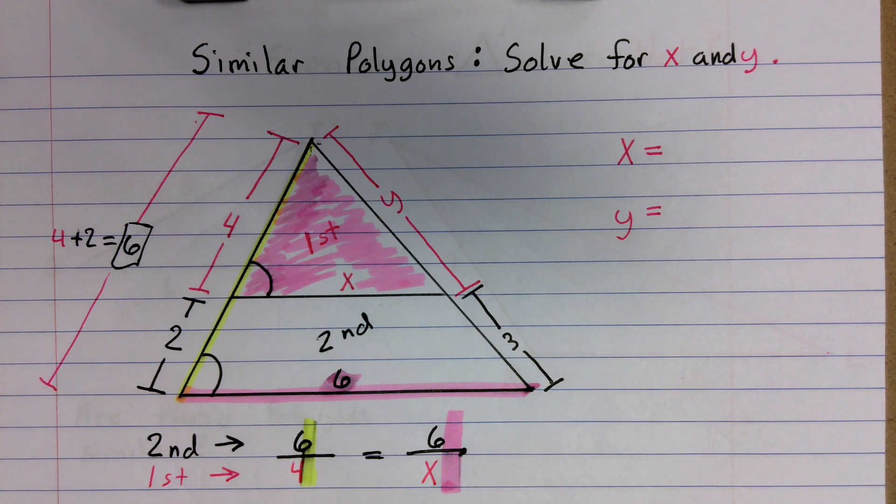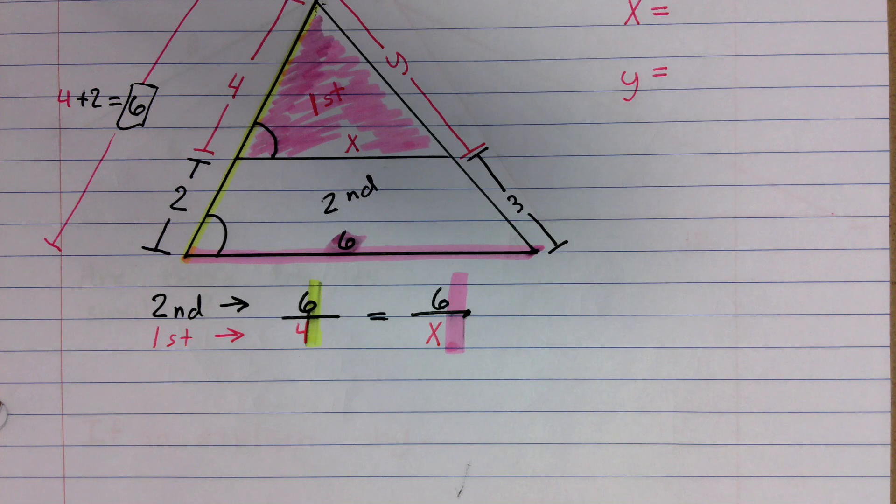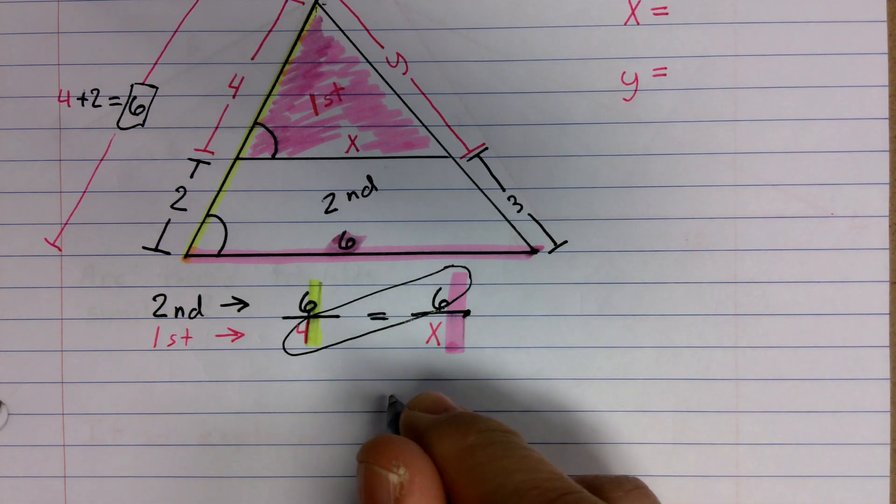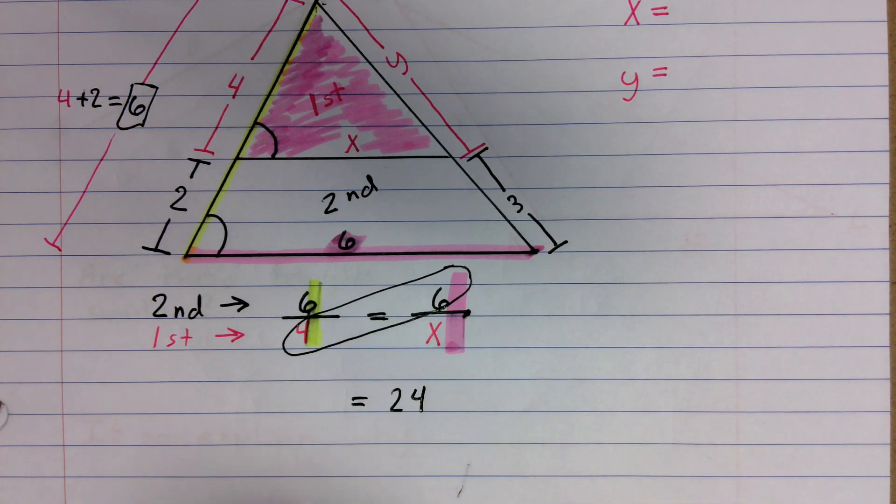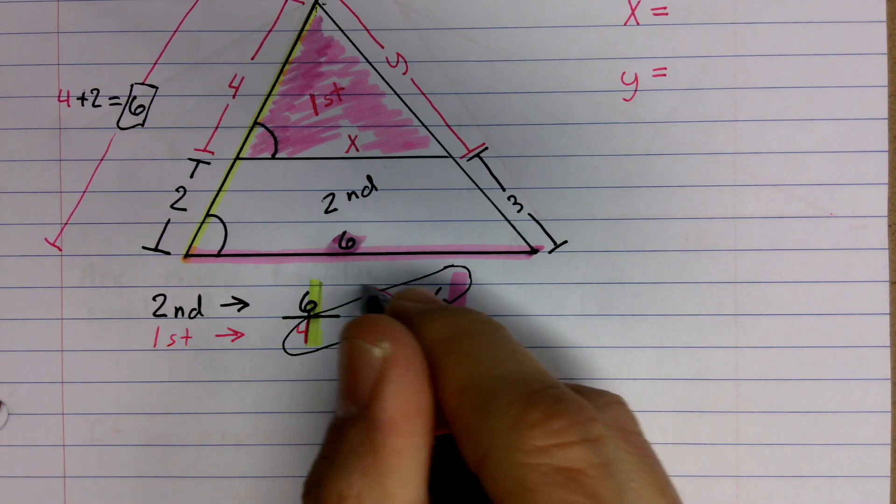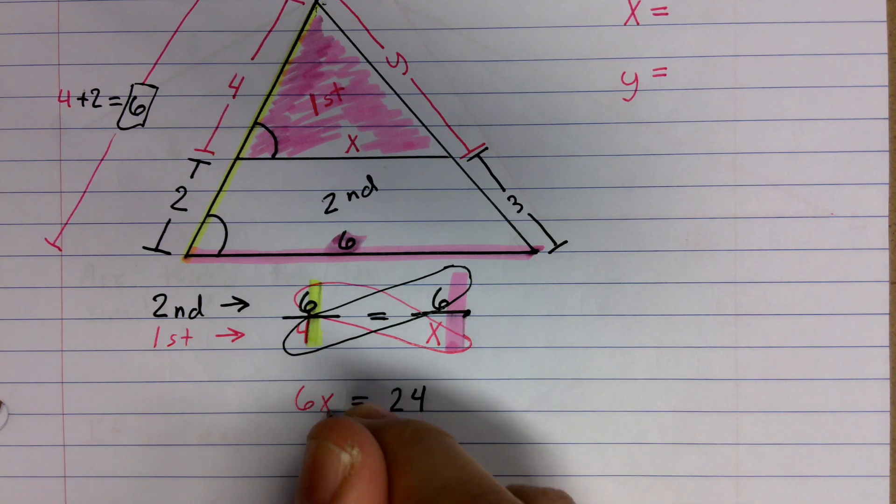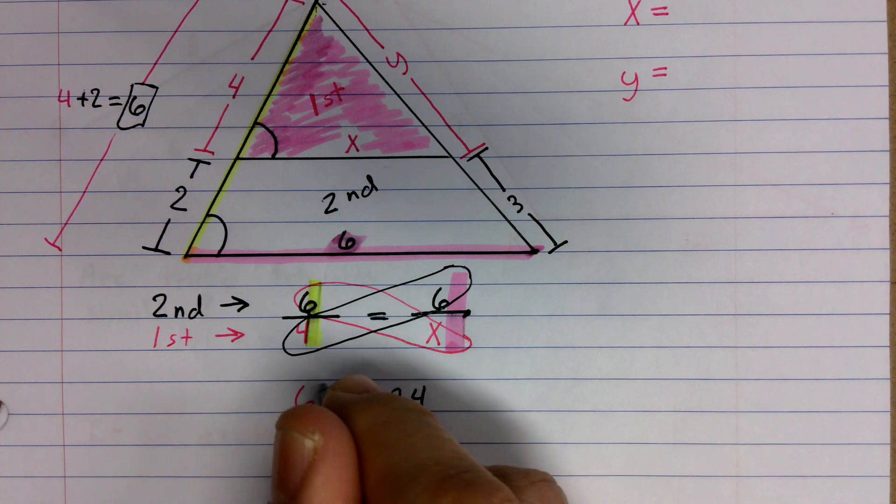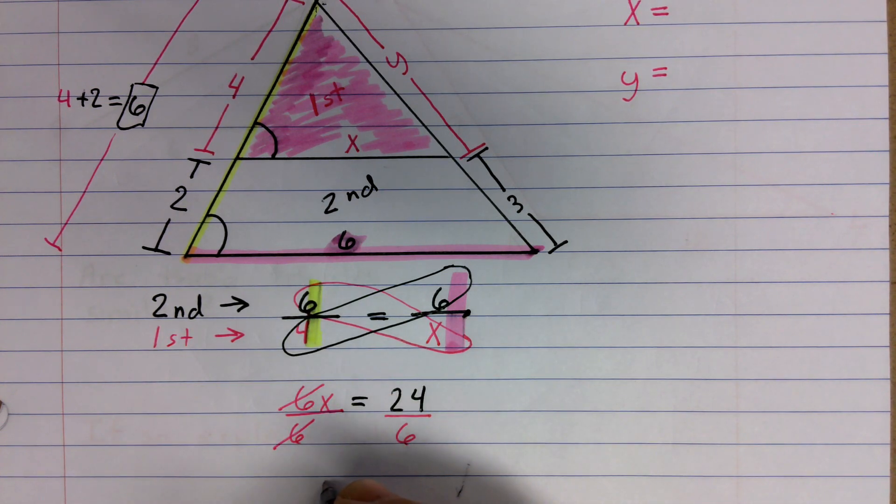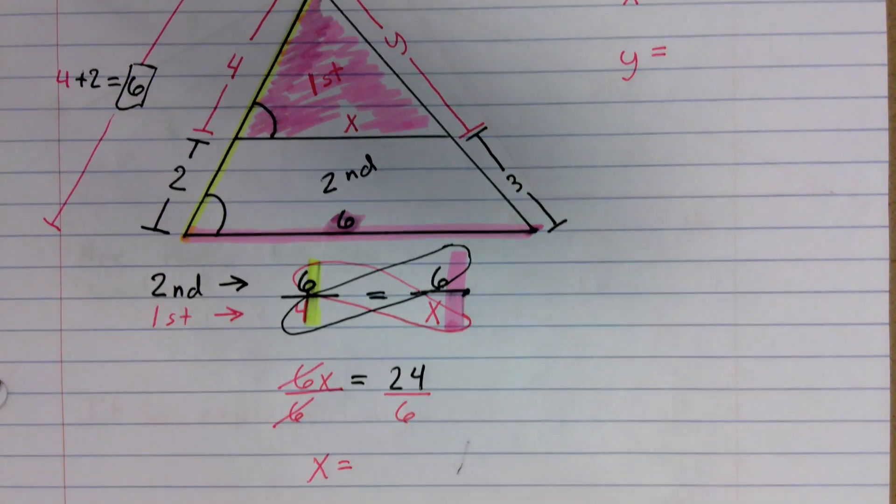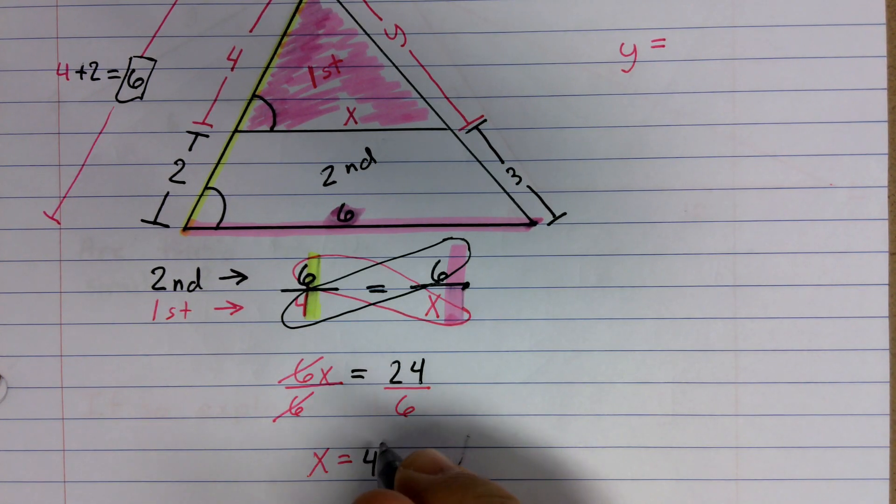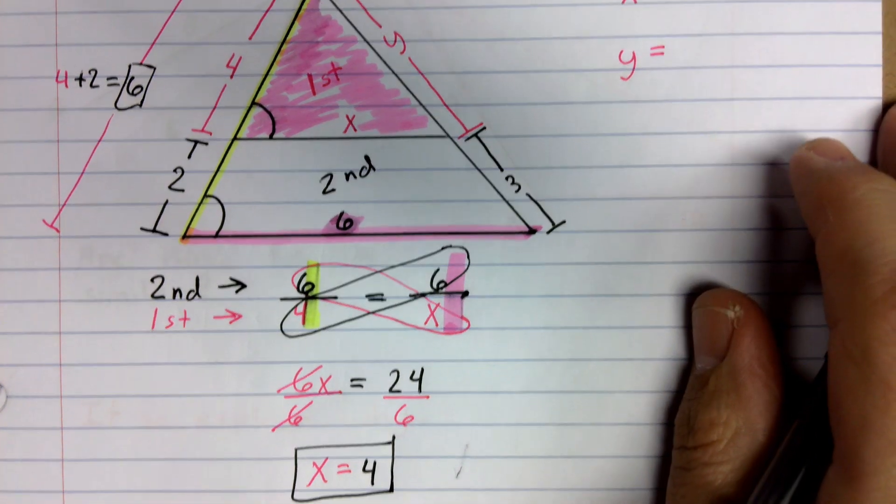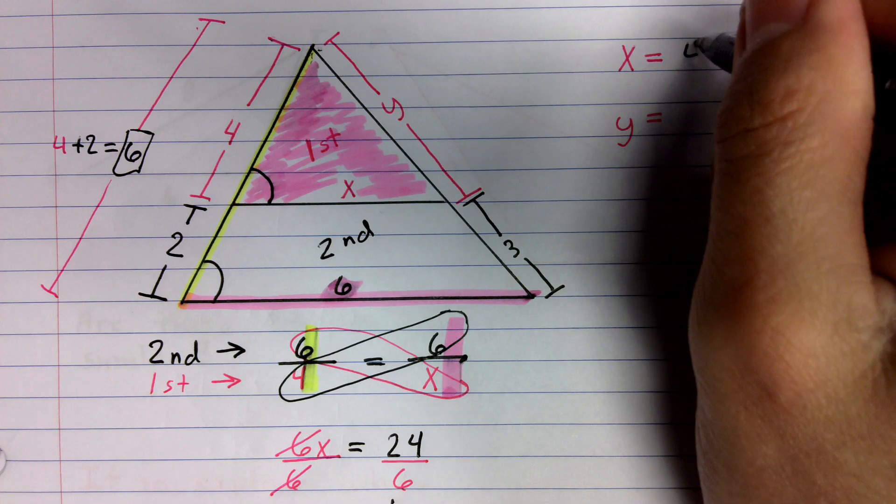Now that I've got this set up, we're just going to go ahead and cross multiply. So I'm going to have 4 times 6, and that is going to give me 24. And then I'm going to cross multiply the 6 and the x, and that's going to give me 6x. And then if I divide by 6 on both sides, I end up with x is equal to 4. So in this case, x is 4. So I'm just going to go ahead and write that up here on the top as well. x is equal to 4.